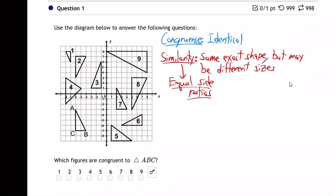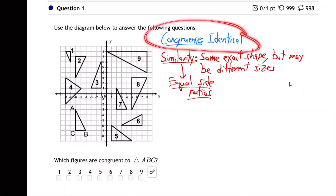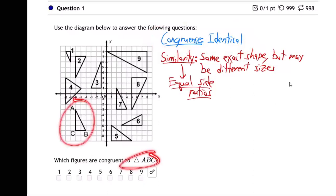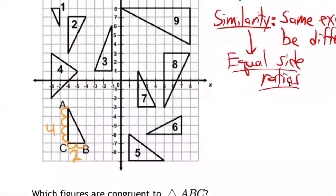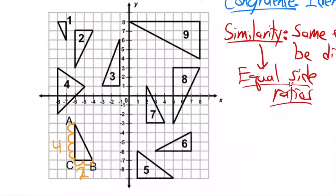The first question is: which figures are congruent to triangle ABC? Congruent means identical — completely and totally the same in every way. Triangle ABC is right here. Let's count its sides: one side has length four and another side has length two. I'm not going to bother with the diagonal — it just connects the side of length four and the side of length two.